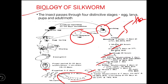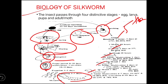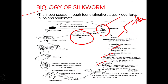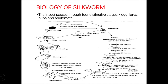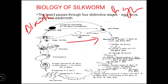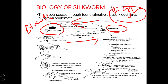Once the larva starts spinning, it forms the pupa inside the cocoon. The adult moth then emerges by making a hole in the cocoon, mates, and lays eggs. In the case of diapausing eggs, the egg initially laid is light yellow in color, but later turns dark (black to purple). These diapausing eggs require an artificial incubation chamber to hatch and begin the life cycle.